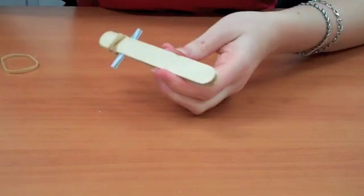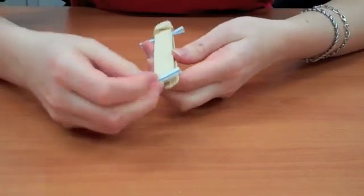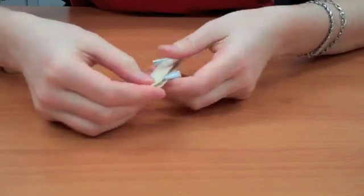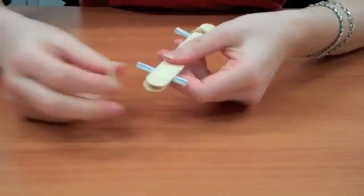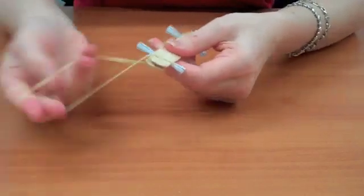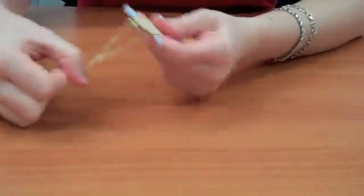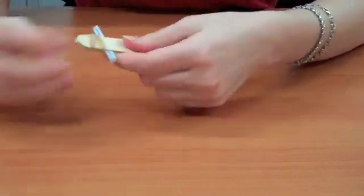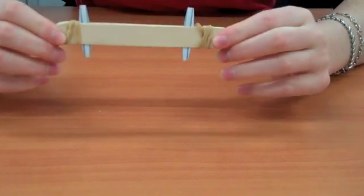Then you're going to do the same thing on the other side. You're going to take your straw, put it through the two popsicle sticks like a sandwich, take your rubber band, and tie the ends. Make sure you're tying on the outside of the straw like this.